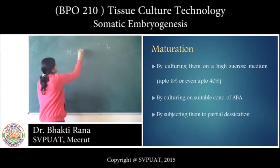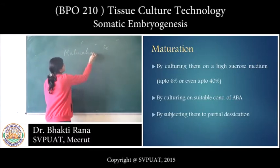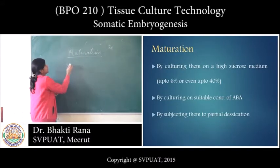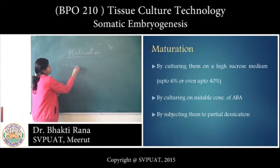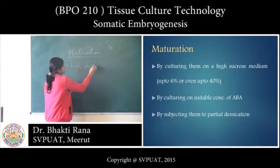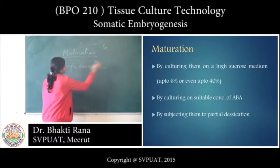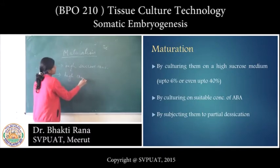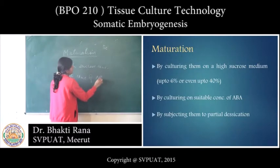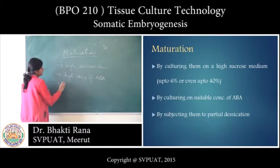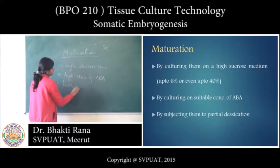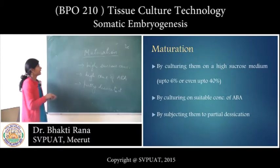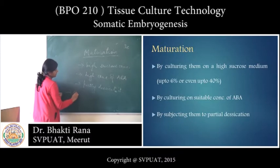The last stage is maturation. For maturation, you can grow the embryo on a medium with high sucrose concentration, or on a medium containing a high concentration of auxin or abscisic acid. You can also partly desiccate it, and after maturation it can be germinated.